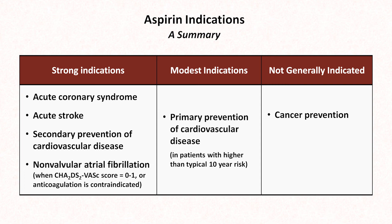You might wonder about taking aspirin for pain relief or to reduce fever — the indications for which aspirin originally became popular 100 years ago. In the 21st century, aspirin is not best used for either of these indications. While it can be effective, non-steroidal anti-inflammatory agents such as ibuprofen and naproxen are as effective and have fewer side effects than aspirin when aspirin is used at the high doses necessary for its anti-inflammatory and antipyretic effects.